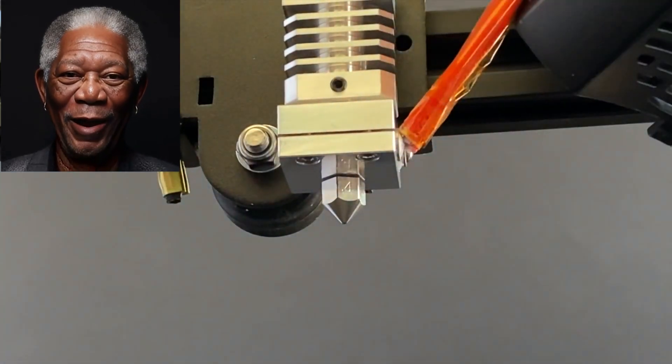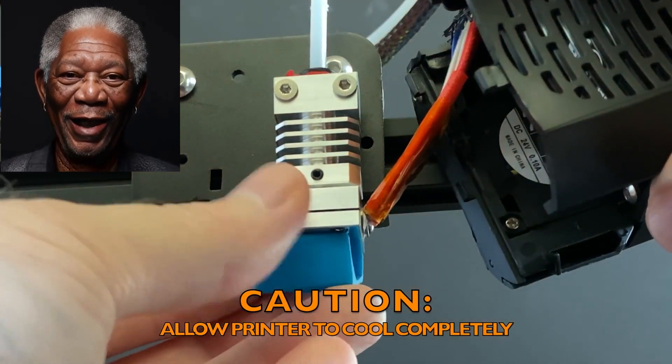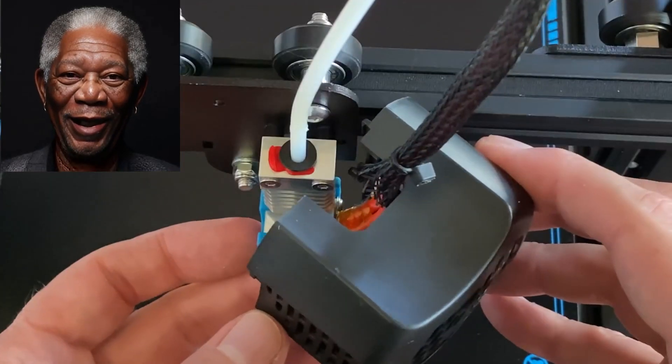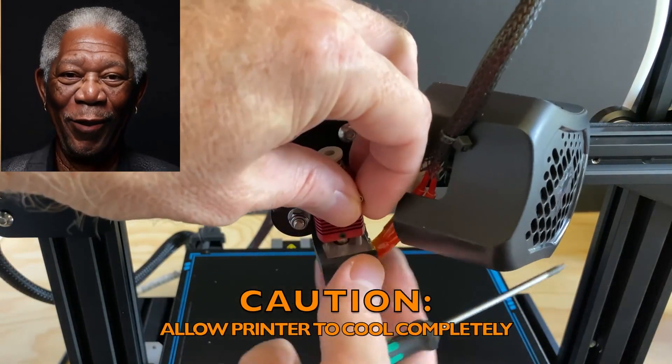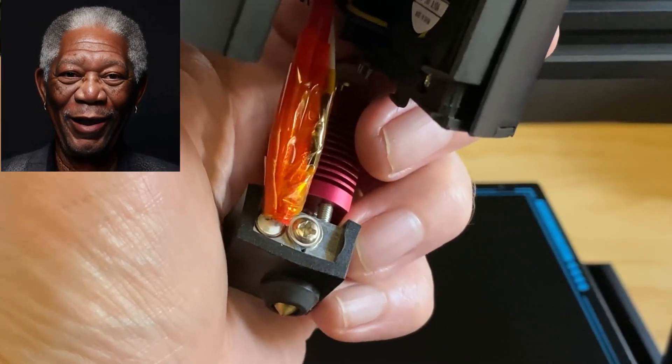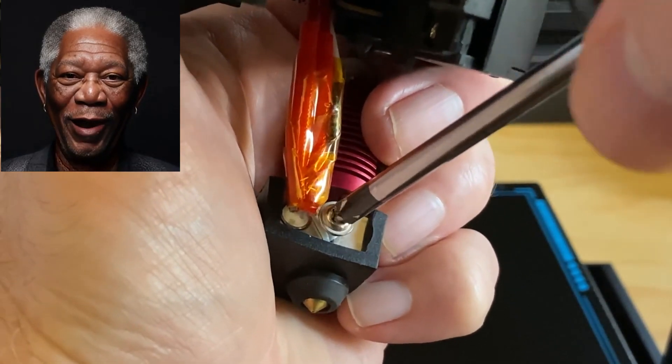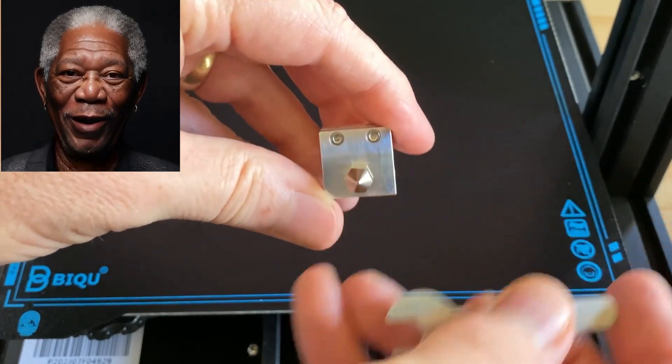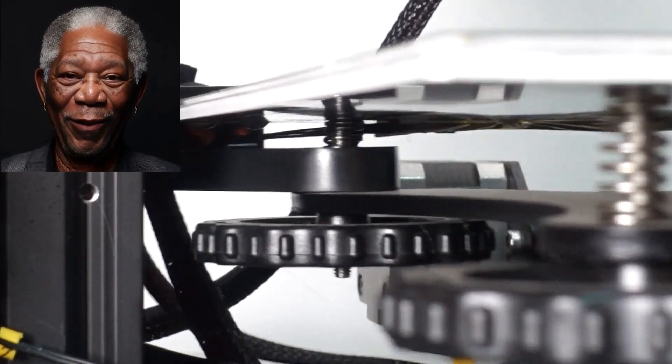Upgrading to an all-metal extruder ensures a more consistent and reliable filament flow, reducing the chances of filament slipping or clogging during prints. With this upgrade, you can confidently experiment with a wider range of filament materials, including flexible filaments, abrasive filaments, and exotic materials. The all-metal hot end further enhances temperature stability, allowing you to print at higher temperatures without the risk of heat creep or filament jams.